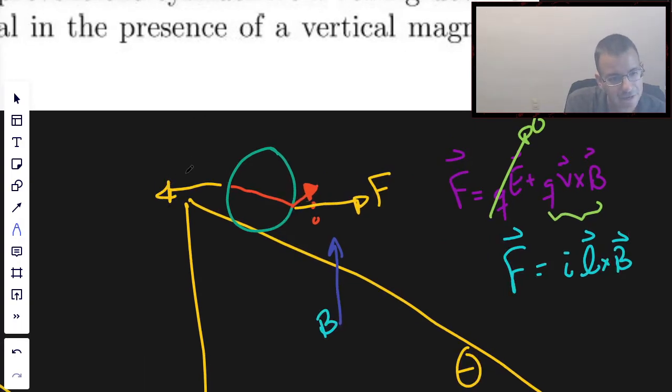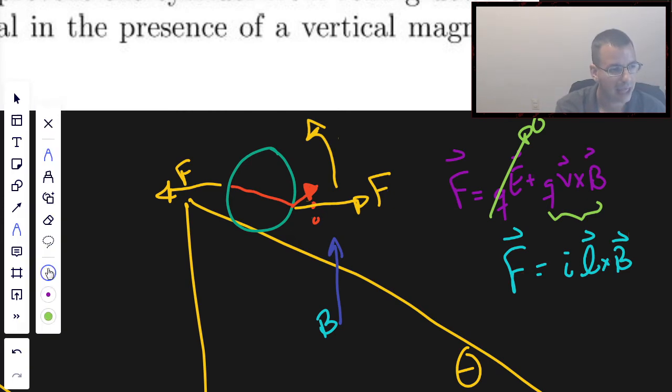And that force is going to cause a torque going that direction. So it's going to try to make the plane of this coil of wire, which you can draw like this, and I'll do A for the area vector, which is the vector that is normal, perpendicular, to the plane of the coil, straight up. It's going to try to align that with the magnetic field, which we say is vertical. So there's going to be a torque going that way.